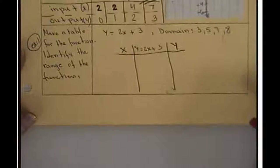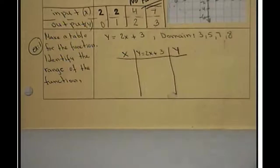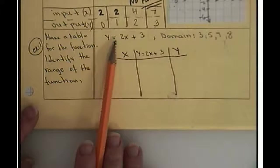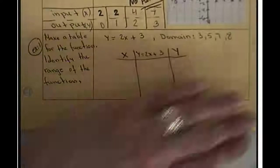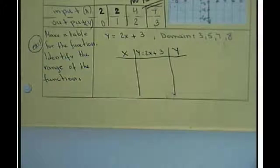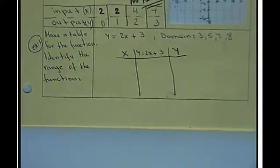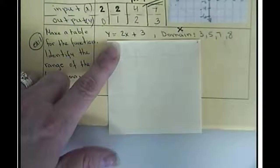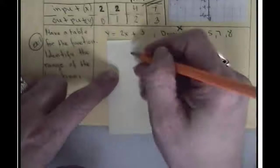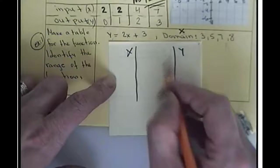Next example that I want to show you is a very similar example to the first mission that we discussed. And we have given a function that says y equals 2x plus 3 with domain 3, 5, 7, 8. So make a table for the function. Identify the range of the function. So imagine the table wasn't given. We don't see this table. If we don't see the table, then what you need to do is you have to make your own table.